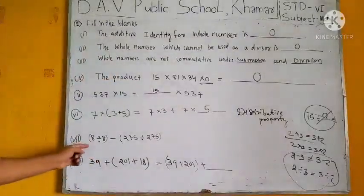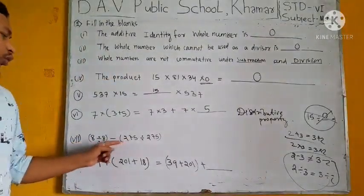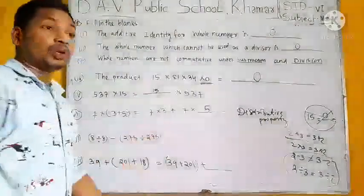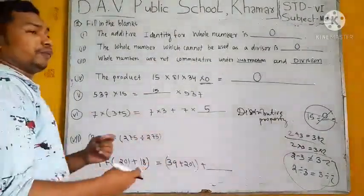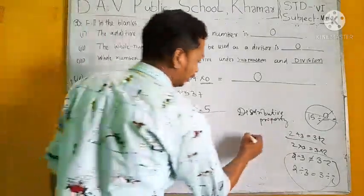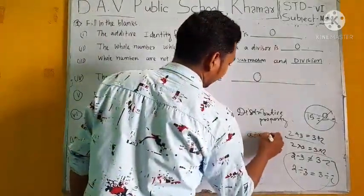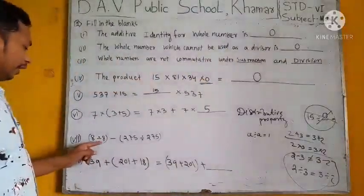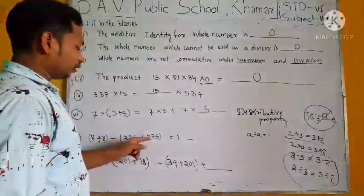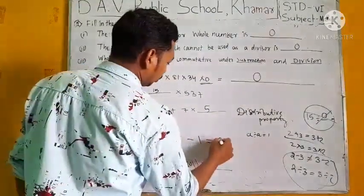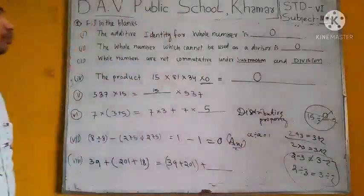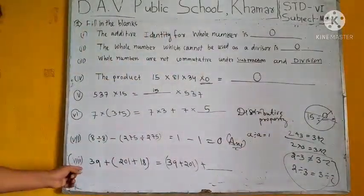Look at here. 8 divided by 8 minus 275 divided by 275. In previous classes we already discussed. If we divide a number by itself we will get 1. It means if we divide a by a we will get 1. That's why 8 divided by 8 minus 275 divided by 275 is equal to 1 minus 1, that is equal to 0.